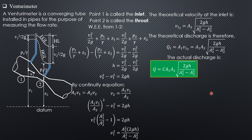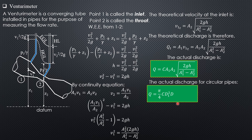For circular pipes, substituting A₁ = (π/4)D₁² and A₂ = (π/4)D₂², the π/4 factors cancel and the actual discharge becomes Q = (π/4) · C · D₁²D₂²√(2gh) / √(D₁⁴ − D₂⁴). This equation is derived by simply replacing A₁ with (π/4)D₁² and A₂ with (π/4)D₂².